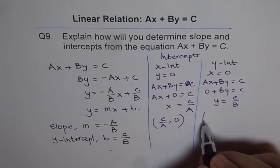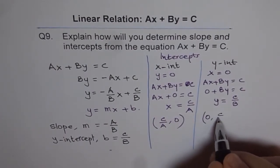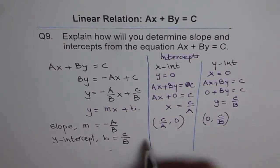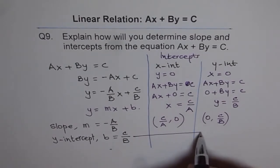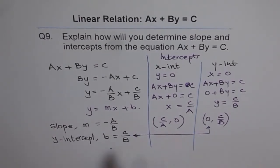And therefore, Y-intercept for us is 0, C over B. You see? It is the same as we got earlier.